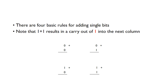We're going to look at how to add binary numbers and then how to create digital hardware which can do binary addition. There are four basic rules for adding single bits: zero plus zero gives zero, zero plus one gives one, one plus zero gives one, and one plus one gives zero and generates a carry into the next column — just like decimal addition where six plus four gives zero with a one carried into the tens column.